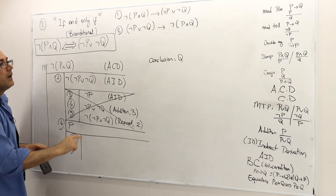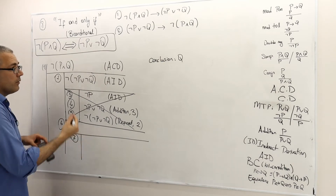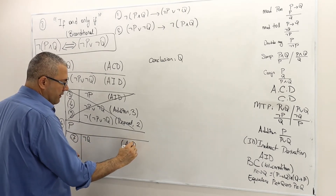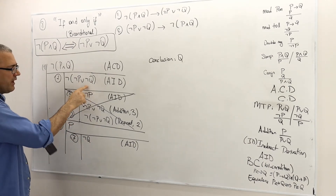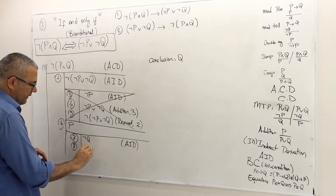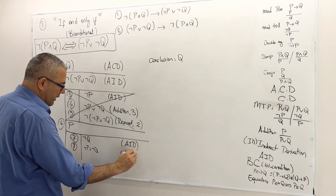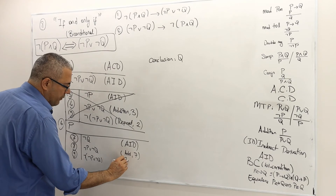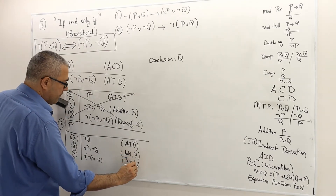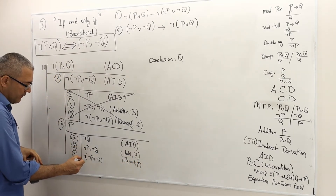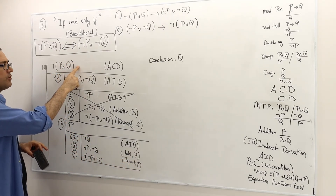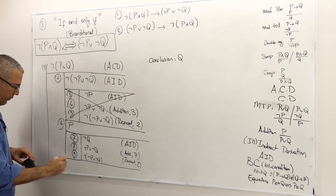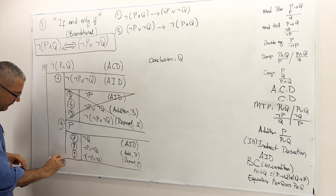I prove Q by contradiction. I open a new box and assume not Q — assumption for indirect derivation. I then add not P to this sentence using the addition rule applied to line seven, giving not P or not Q. Then I repeat not P or not Q from line two. I've got a contradiction again, so Q must be true — line 10.